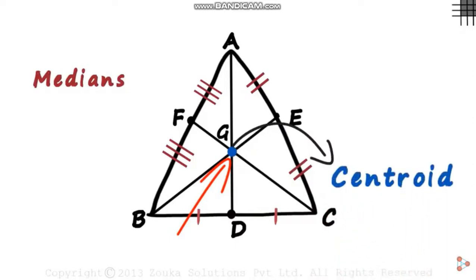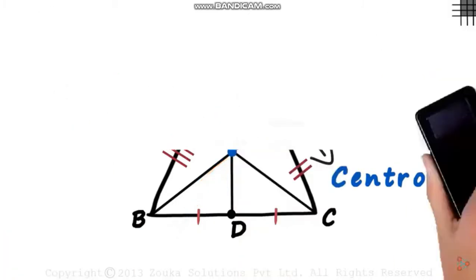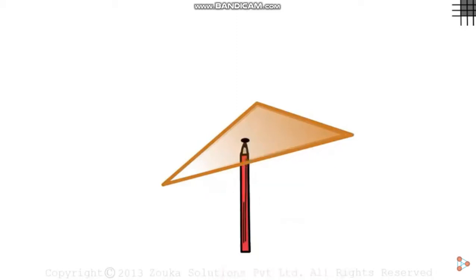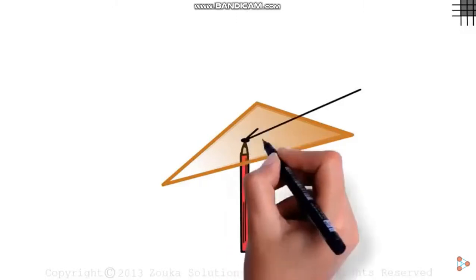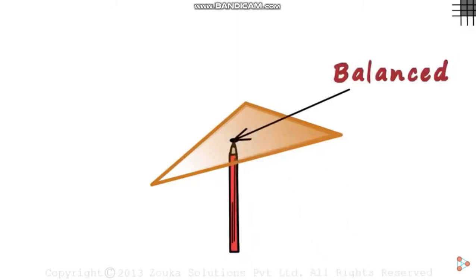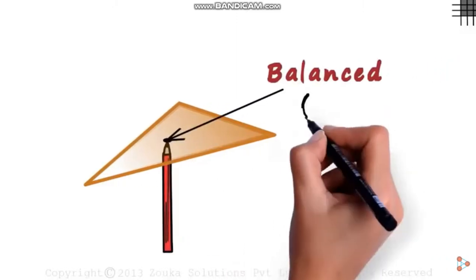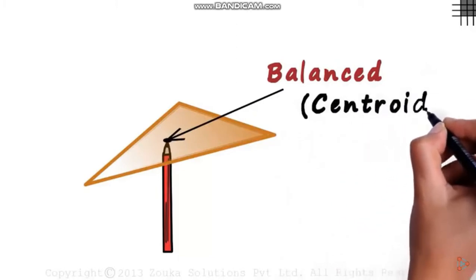For applications in real life, suppose you wish to balance a triangular shaped cardboard on a pencil. You will observe that there is exactly one point where it will be balanced, and that point will be the centroid of the triangle. It will always be balanced at the centroid.